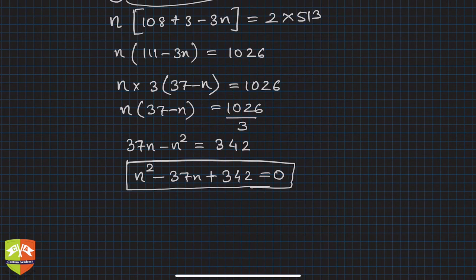You can see this is 18 times 19 equals 342. So I can write n² - 18n - 19n + 342 = 0.